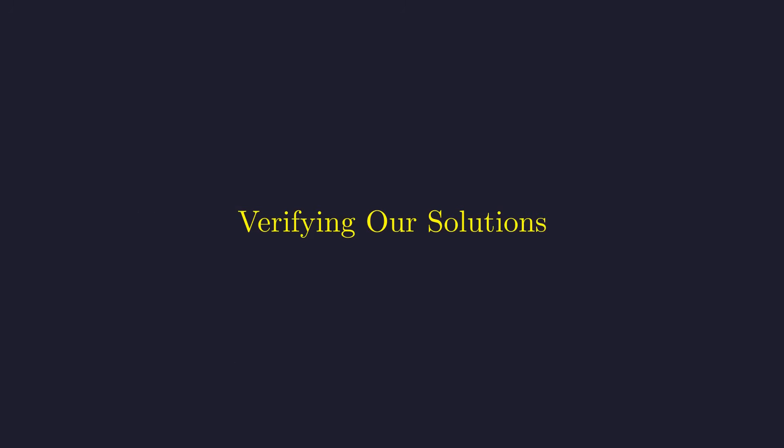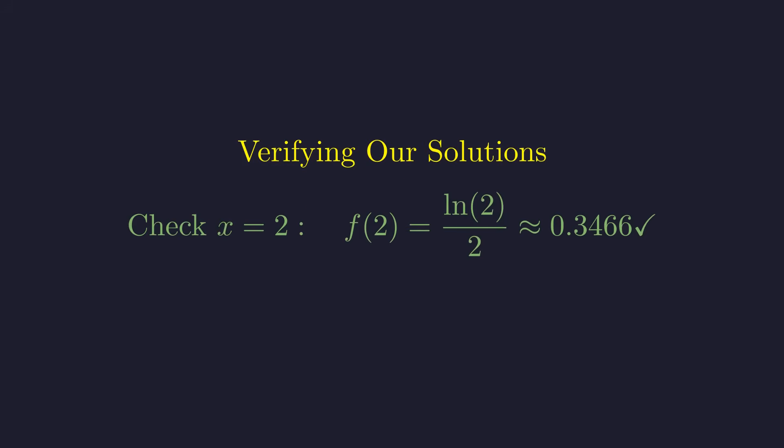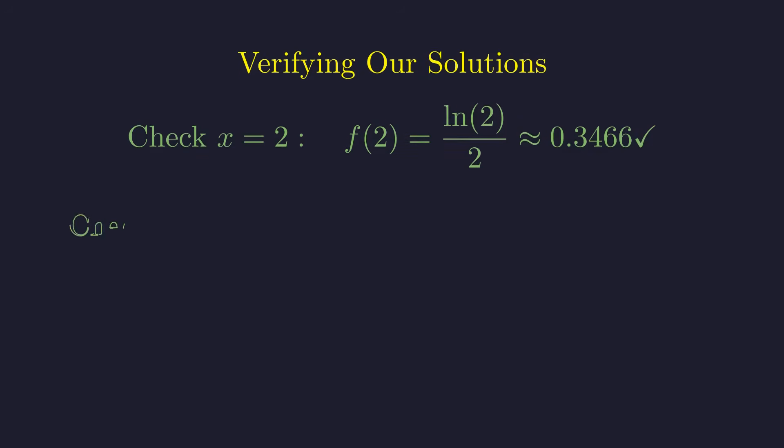Now let's rigorously verify that these intersection points actually solve our original equation. Let's verify our first solution. When x equals 2, f of 2 gives us natural log of 2 over 2, which matches our target value exactly. For our second solution, when x equals 4, we get natural log of 4 over 4. Since natural log of 4 equals 2 times natural log of 2, this simplifies to natural log of 2 over 2 as well.